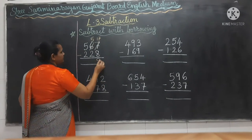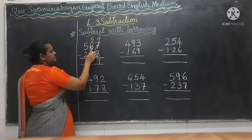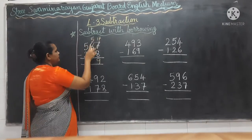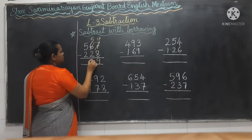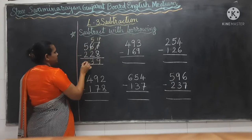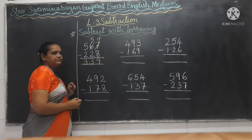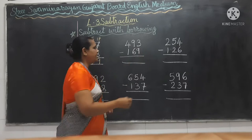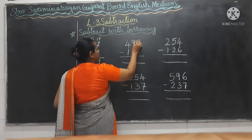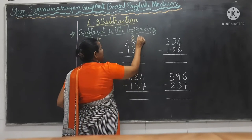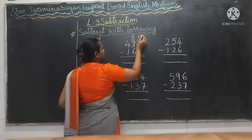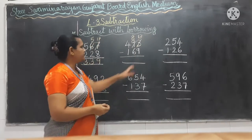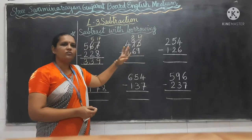Now 5 minus 2 — from 6 you have to go to 5, you have to cut the digit 5. 5 minus 2 is 3. Again, 5 minus 2 is 3. Now from 3 you have to cut 9, so again you have to borrow. Now 13 minus 9 — how much? 4.